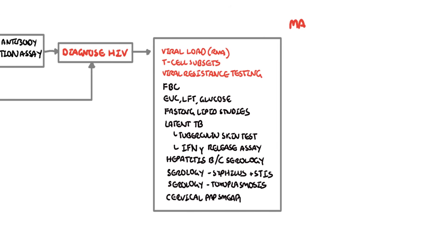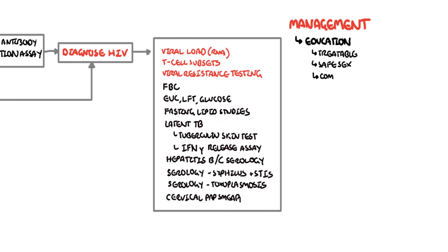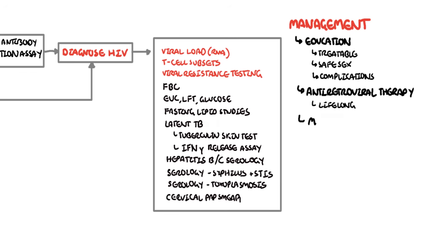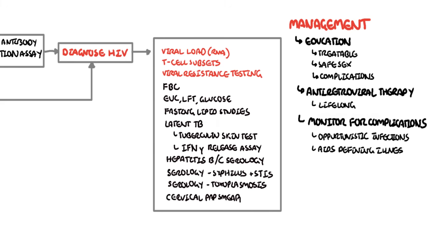The management of HIV, briefly. Education is very important — the infection is treatable and a person can have a normal life. Educate them on safe sex and condoms, as well as the complications of the disease and the medications. Treatment involves antiretroviral therapy, and it is important to treat the person right away as it is lifelong treatment. Monitor for complications, specifically opportunistic infections, AIDS-defining illnesses, and medication side effects.